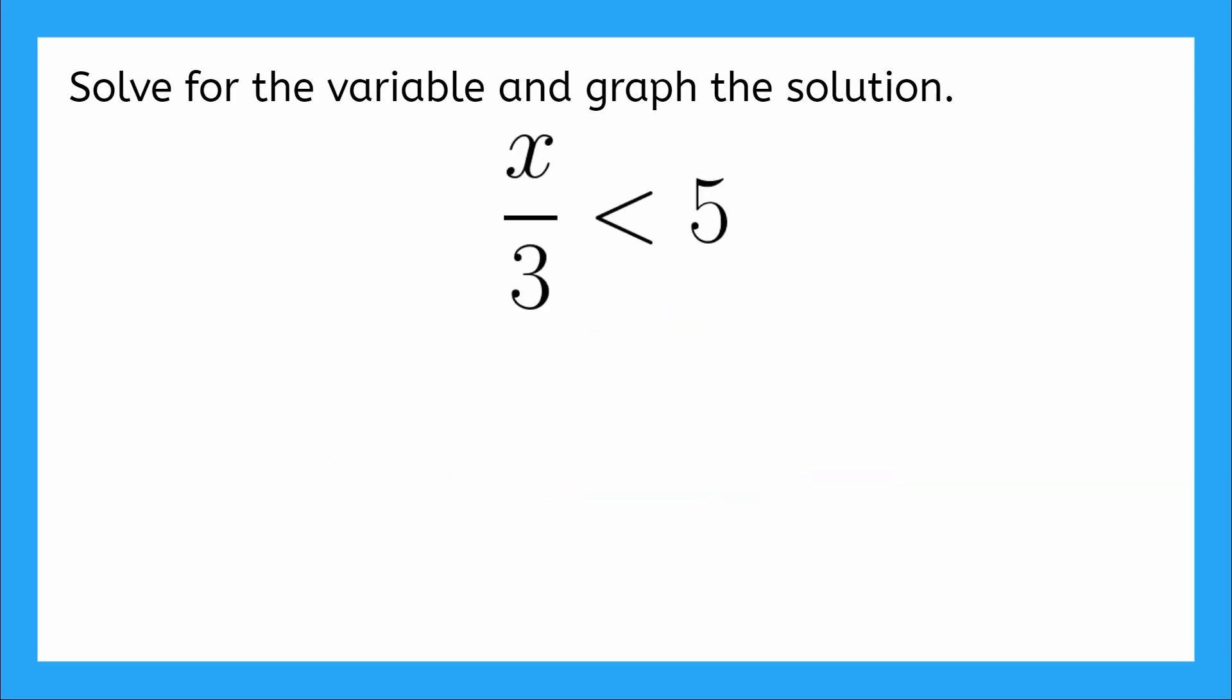This time we have an inequality that looks like x over 3. Remember x over 3 is the same as saying x divided by 3 is less than 5. We got to solve for our variable. So solve for x and then graph our solution. So how do I undo x over 3 or x divided by 3?